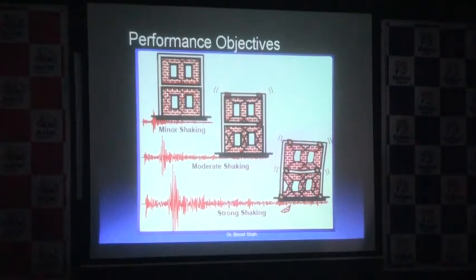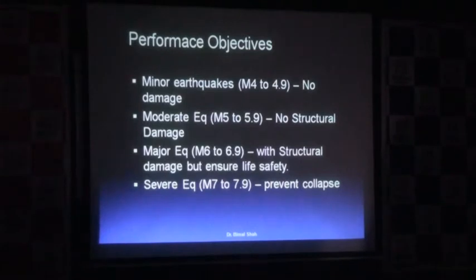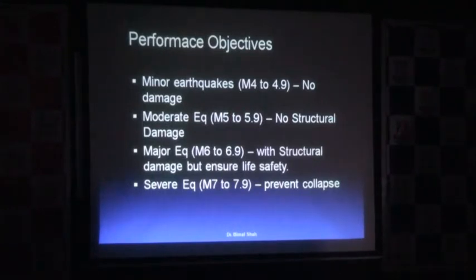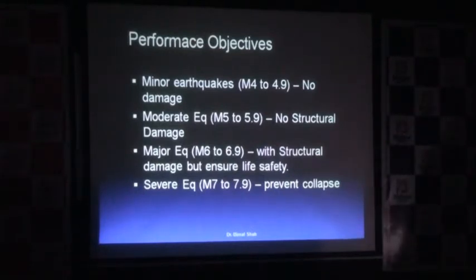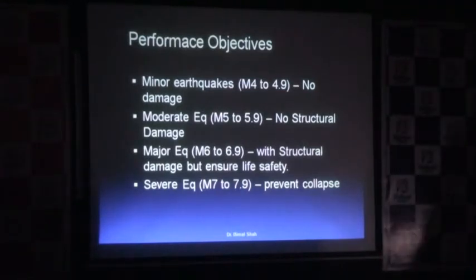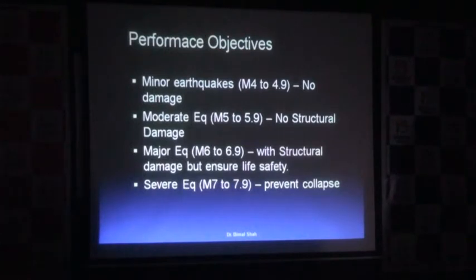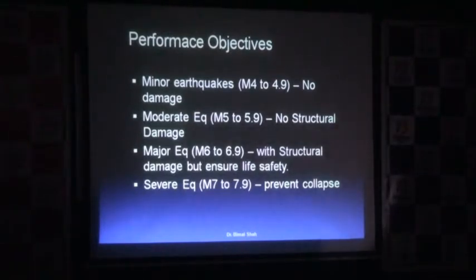Properties can be damaged, but lives are the topmost priority. Performance objectives, if we define in terms of magnitudes: minor earthquakes mean magnitude 4 to 4.9 on the Richter scale. Moderate is defined as magnitude 5 to 5.9 — no structural damages are supposed to occur there. In case of a major earthquake of magnitude 6 to 6.9, there may be structural damages but life safety is ensured. And finally, in case of a severe earthquake of magnitude greater than 7, collapse should be prevented.